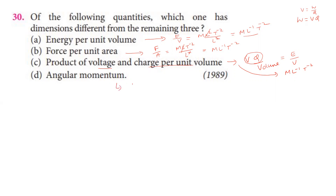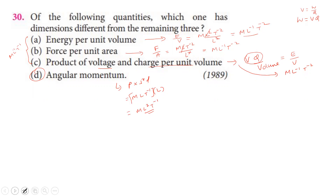Angular momentum equals momentum into perpendicular distance. Momentum dimension is MLT⁻¹, perpendicular distance is L, so angular momentum is ML²T⁻¹. This is different from ML⁻¹T⁻². So the fourth option — angular momentum — has a different dimension.